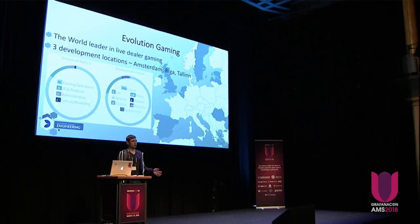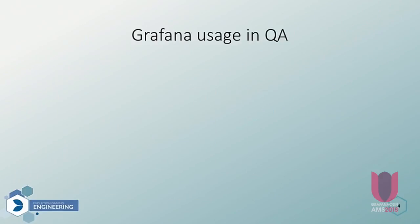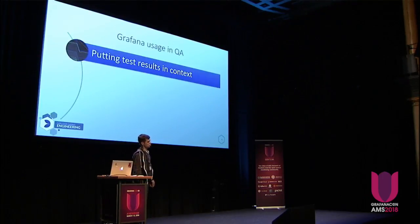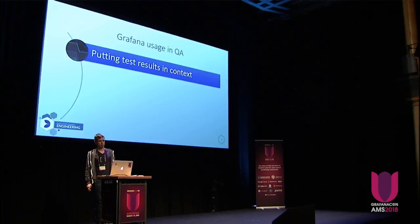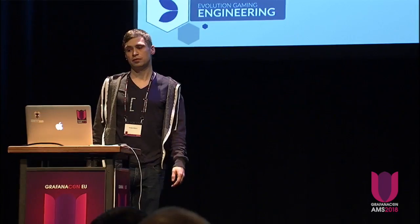We have about 350 engineers working in total. Today I will talk about three main use cases of Grafana in quality assurance. The first one is putting test results in context — numbers become graphs, which gives the possibility to compare different products in a graphical way.